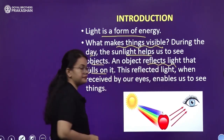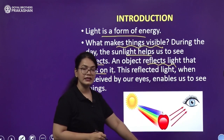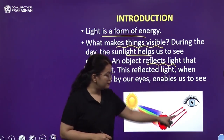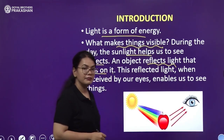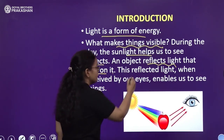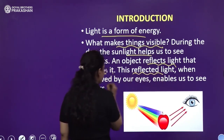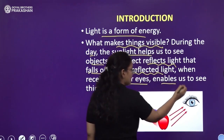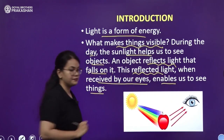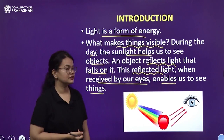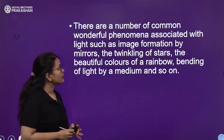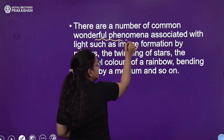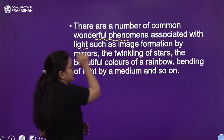During the day, sunlight helps us to see objects. An object reflects the light that falls on it — just as in the case of the apple, light falls on it and it reflects the light back. This reflected light, when received by our eyes, enables us to see things. There are a number of common and wonderful phenomena associated with light.